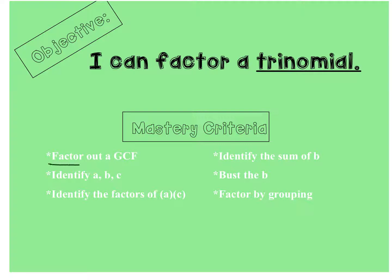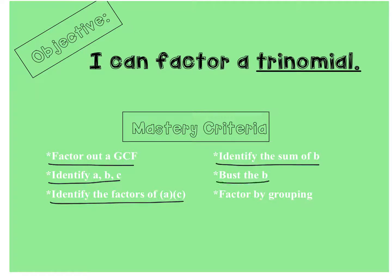So we can factor out a GCF, we can pick out A, B, and C, we can find the factors of A times C that add to be B, we've learned how to bust the B and turn it into a polynomial with four terms, and we can factor by grouping. Congratulations!